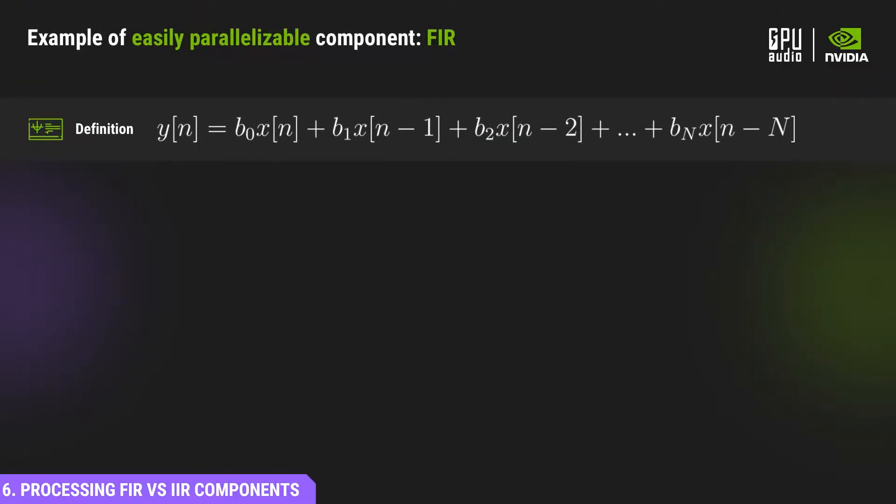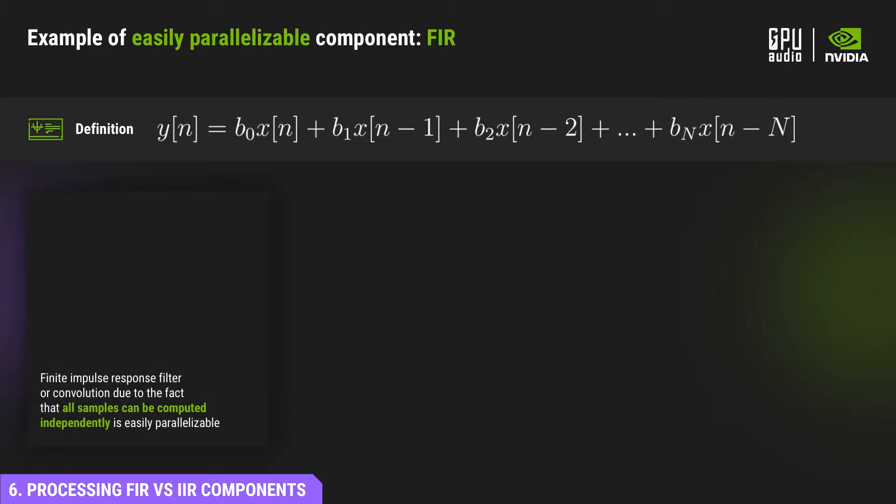This is an example from the first bucket, an FIR filter. Here you can see a definition of an FIR filter that is n samples long. It doesn't have data dependencies and you can make sure that it doesn't by looking at its definition.